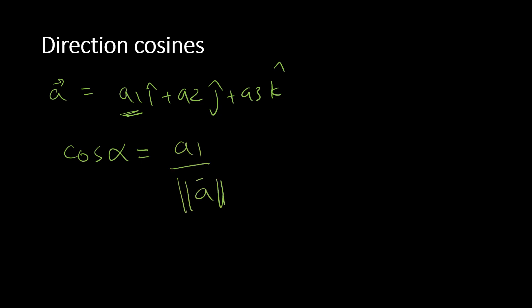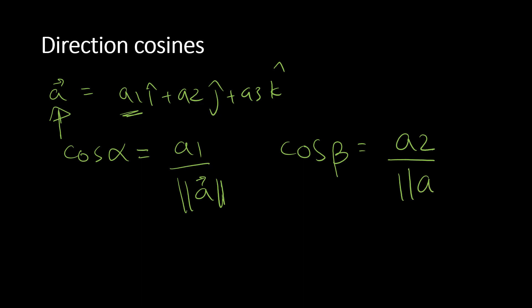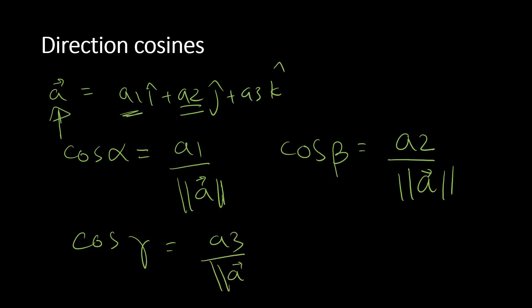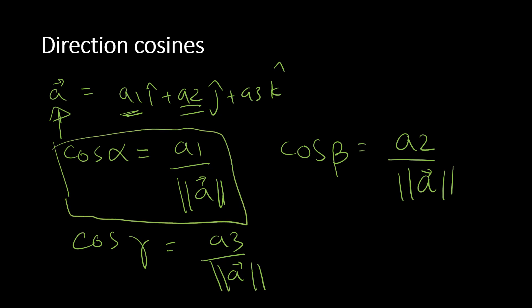Cosine of beta equals a2 over the magnitude of A — where a2 is the component with ĵ — and cosine of gamma equals a3 over the magnitude of A. These are the formulas you need to know to calculate the direction cosines.